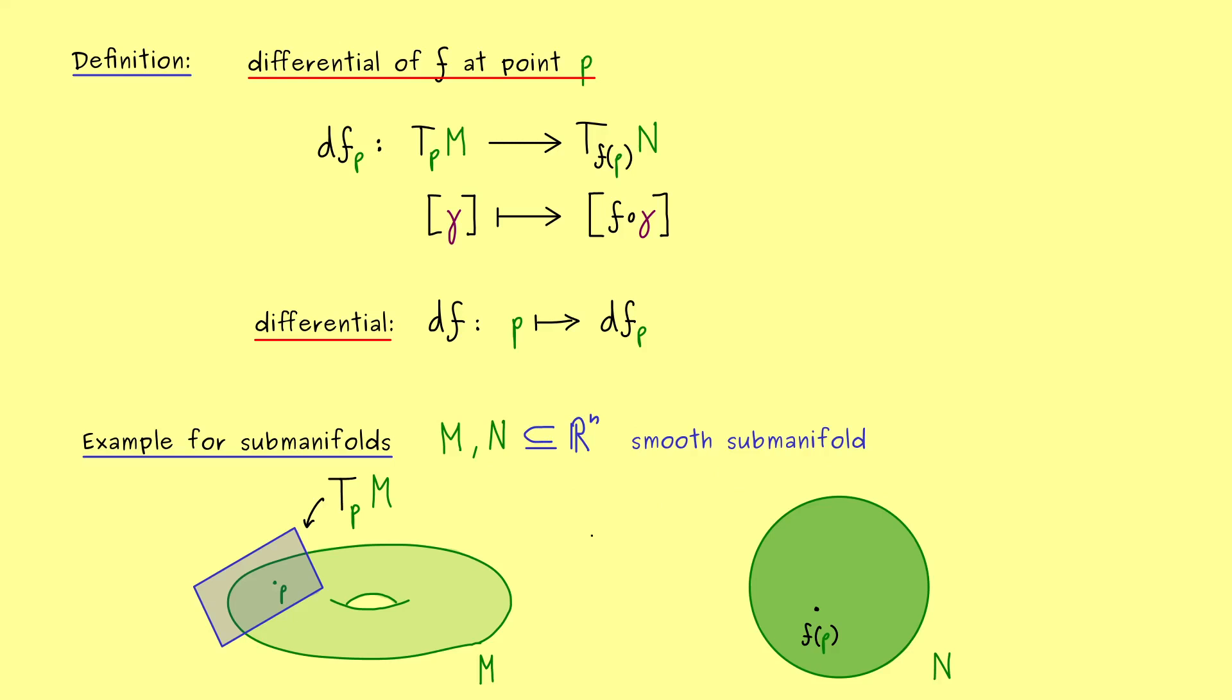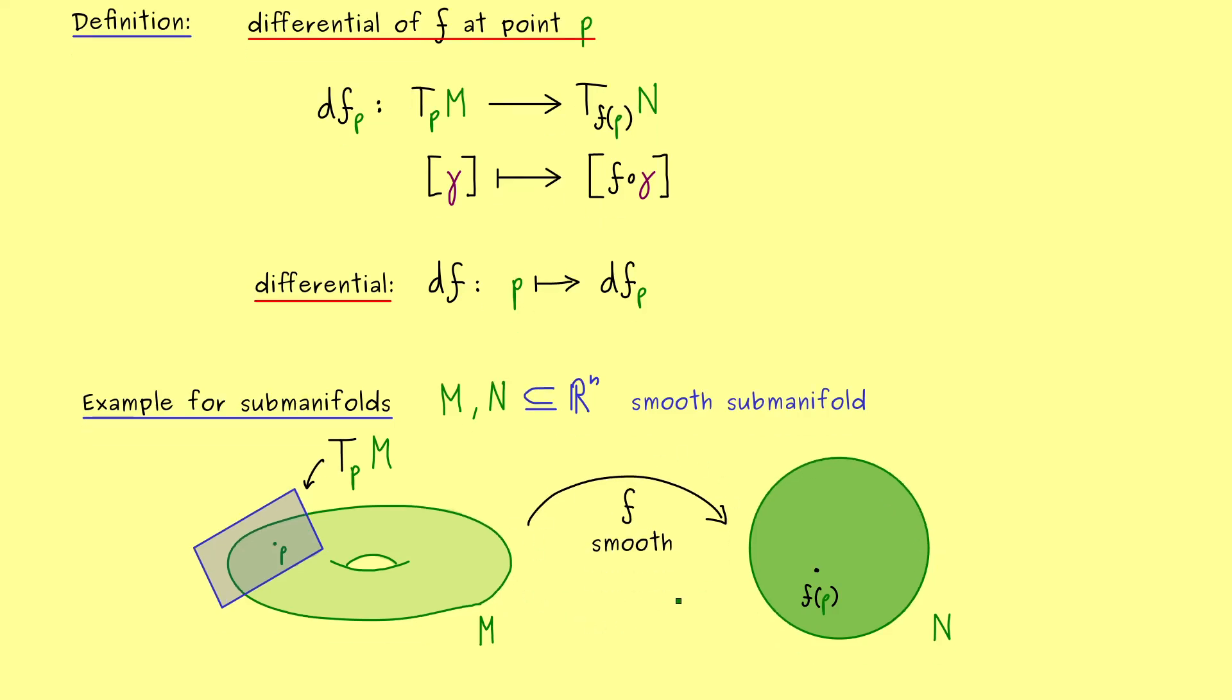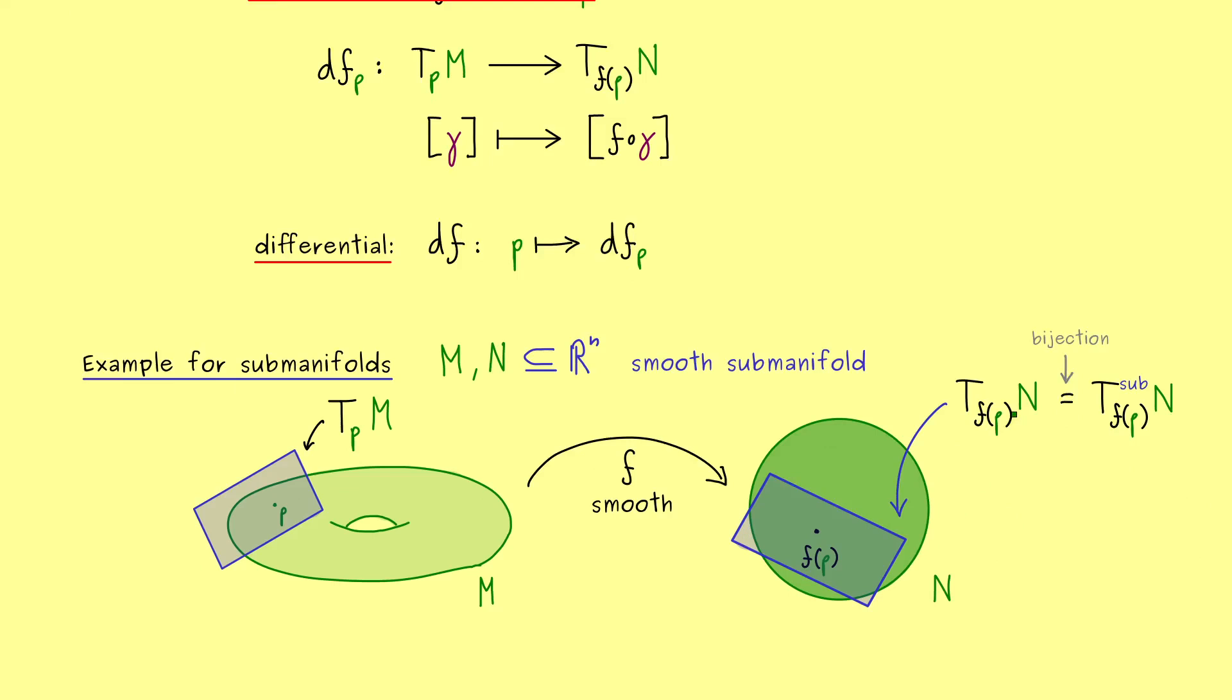The picture should be the same as before: we have M on the left hand side and N on the right hand side, then we have a map from left to right, our smooth map f. The good thing is here on the right hand side instead of our abstract tangent space we can use the concrete one for submanifolds. Please recall for this one we had a special notation. Not so complicated, we just put 'sub' in the upper index of this tangent space. I wrote here an equality sign but you already know this is not literally correct because it's just a one-to-one correspondence, a bijection. However since we have this bijection we can just identify both things if there is no confusion. Let's write down this bijection again.